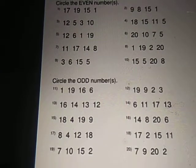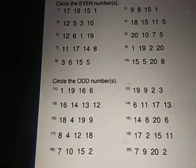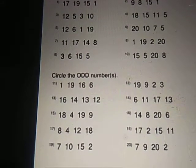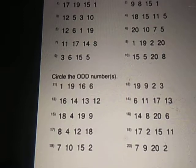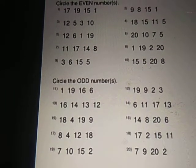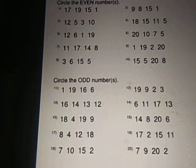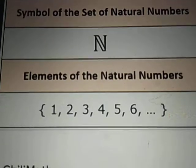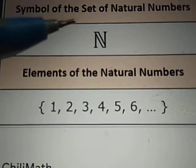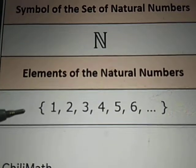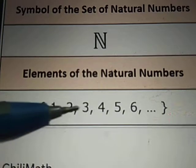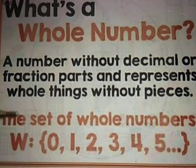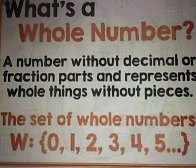Here is an assignment for you, students. There are a few numbers arranged in columns: 17, 19, 15, and 1. First, circle the even numbers — use the divisibility rule, divide by 2, and circle those with remainder 0. Below that, circle the odd numbers. Also, just to note: the set of natural numbers is denoted by the letter N, starting from 1, 2, 3, 4, 5, 6 and so on. The set of whole numbers is denoted by the letter W, starting from 0, 1, 2, 3, 4, 5 and so on.